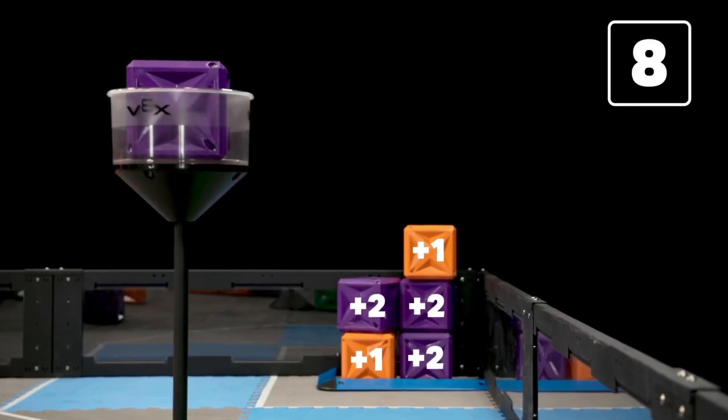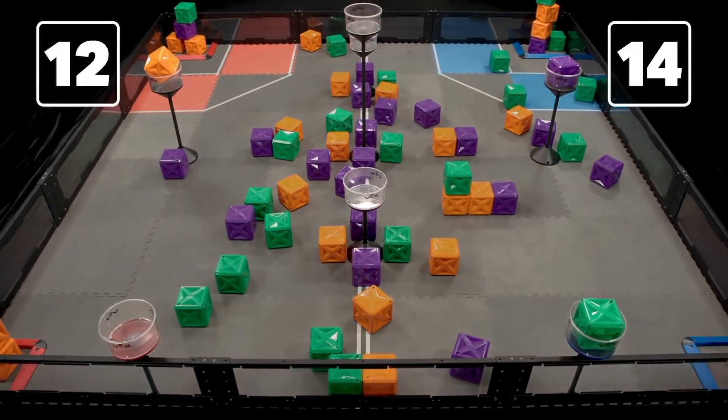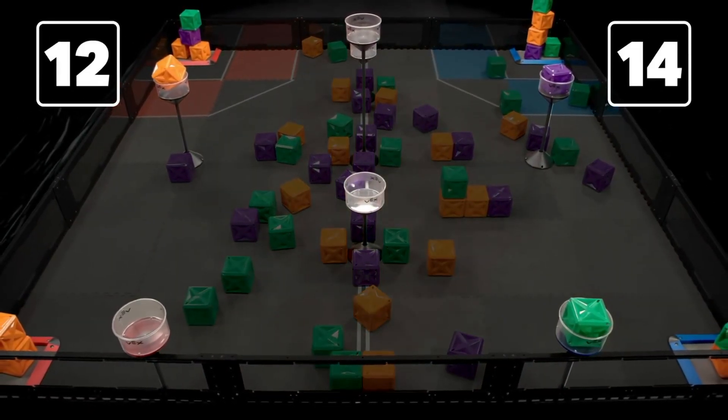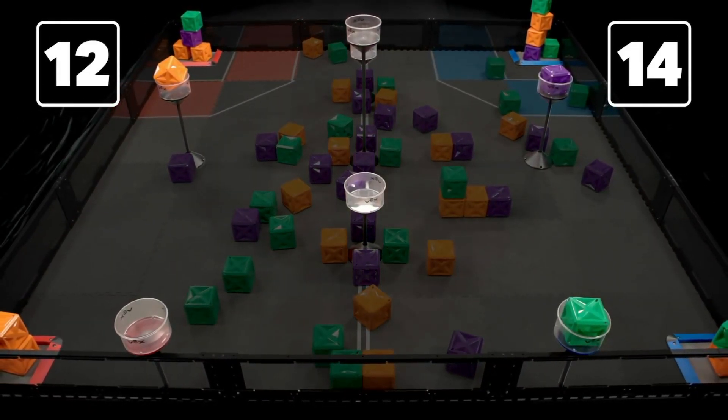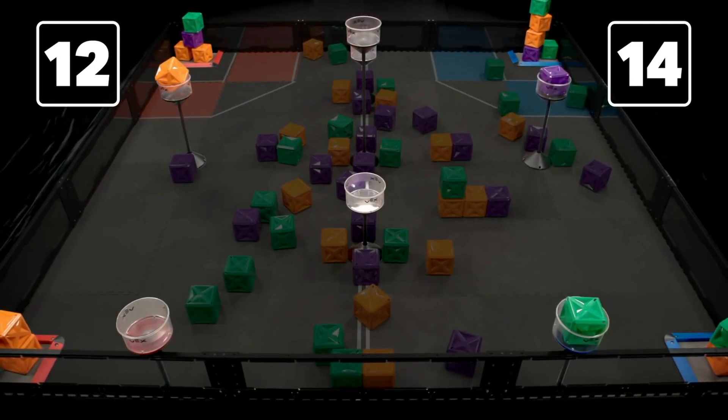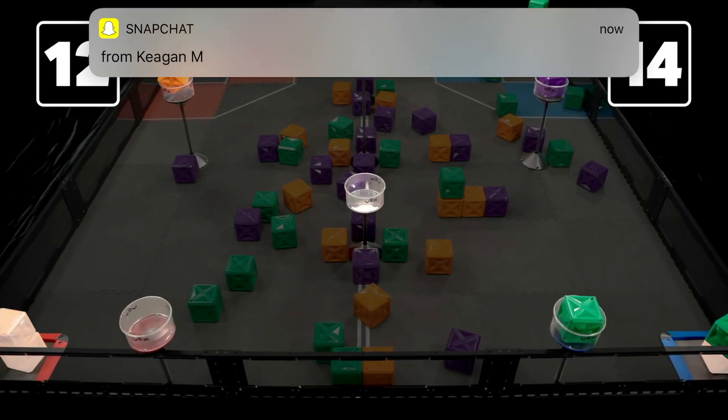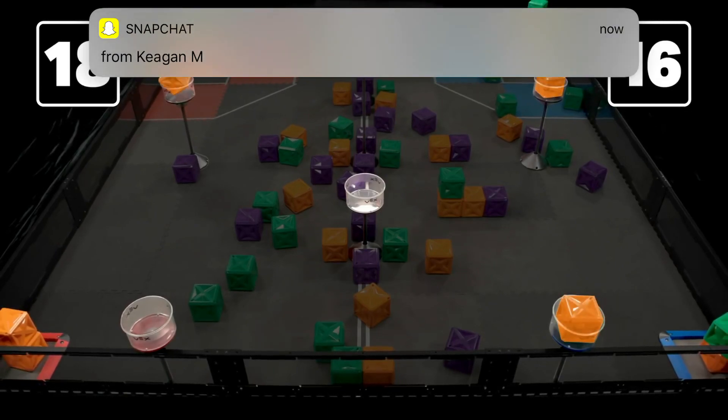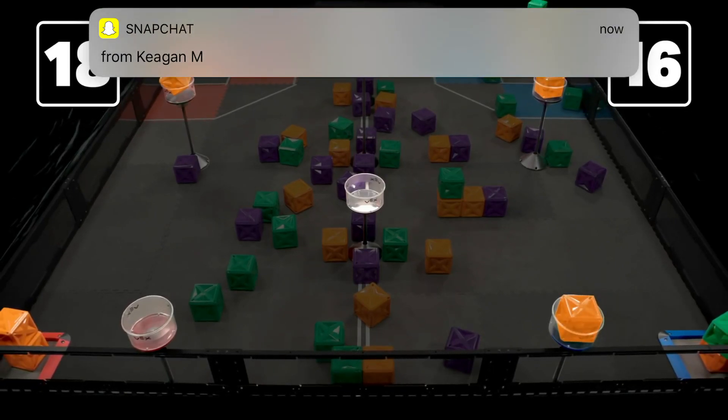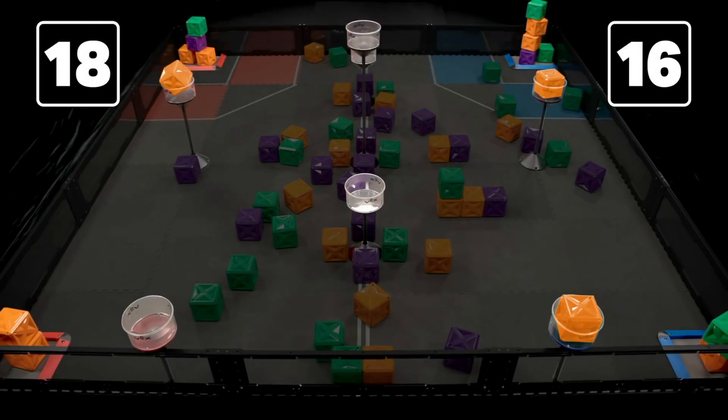This means that although cubes in towers are not worth any points by themselves, the value of scored cubes in goal zones may change throughout the match. When cubes are placed in or removed from towers, the new values apply to all cubes. So, the actions of one robot will impact the potential score for both their own alliance and their opponents.